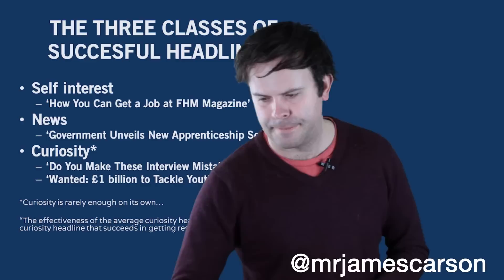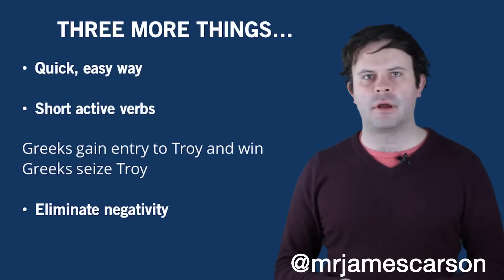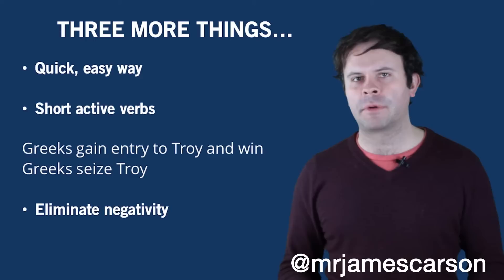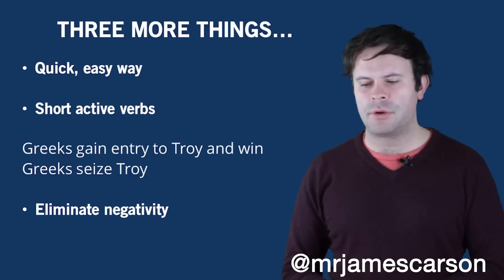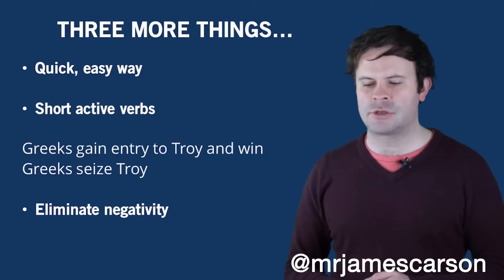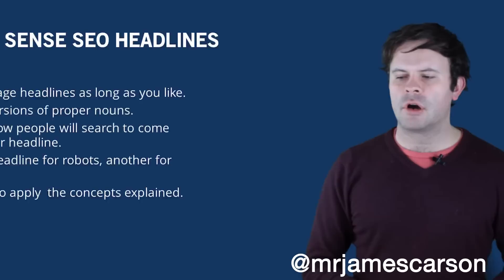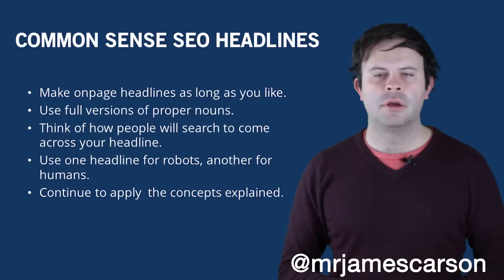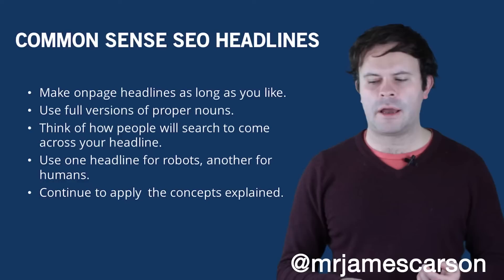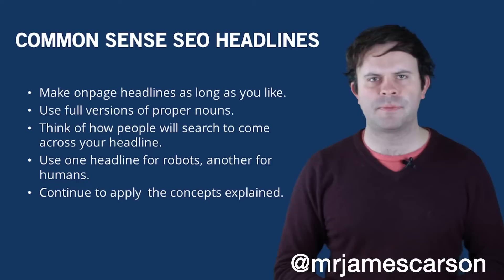Three more things: it's important to have a quick, easy way — that's why headlines like 'Five steps to...' or 'Three ways to your perfect bikini body' can be quite successful. Use short, active verbs — 'Greeks seize Troy' is better than 'Greeks gain entry to Troy and win.' And eliminate negativity. For SEO, make on-page headlines as long as you like, use full versions of proper nouns, and think about having one headline for robots and another for humans using plugins like Yoast SEO or Headspace on WordPress.